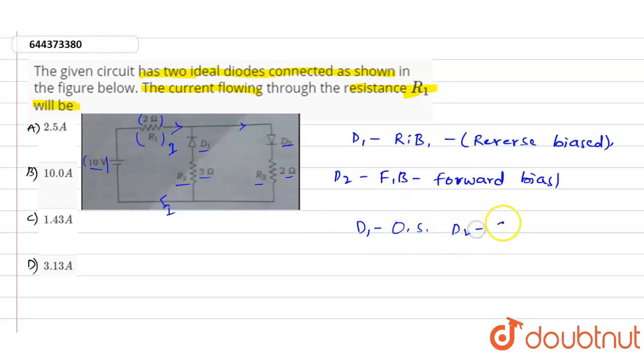R1 equals I equals V divided by R1 plus R3. So that will be equal to